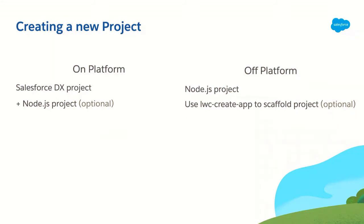Let's start first by how do we create a new project — I'm going to compare how you do that on the platform versus outside of the platform. If you're running on platform, you will need Salesforce DX to work with Lightning Web Components. For those who may be new to LWC and were used to developing on Aura or Visualforce, the tooling is a bit different here. For example, you don't have access to the developer console when doing Lightning Web Components. You have to use an external tool — the one we recommend is Visual Studio Code with the Salesforce DX extensions. The key idea here is that you're going to work with the metadata API, and the Salesforce DX project handles that for you. You can add a Node.js configuration to your Salesforce DX project to enable dependency management and code checking on your local machine.